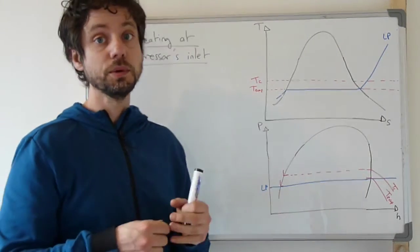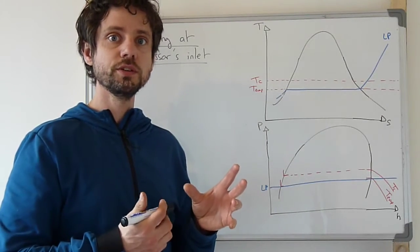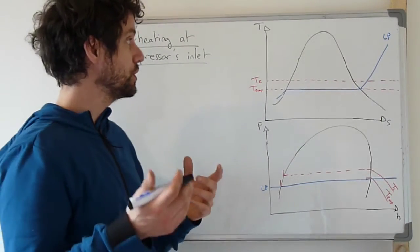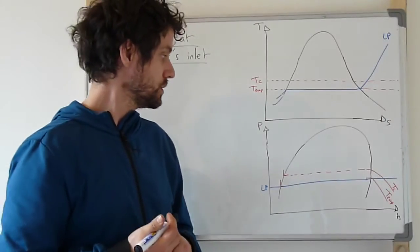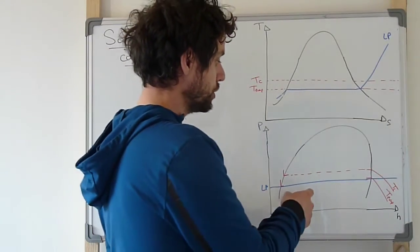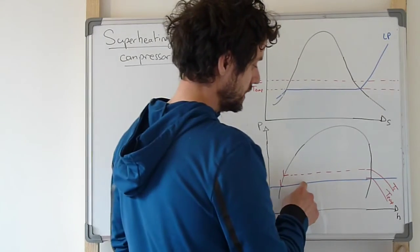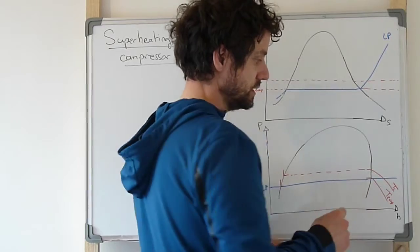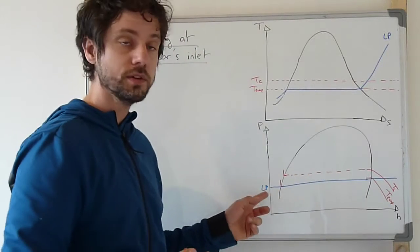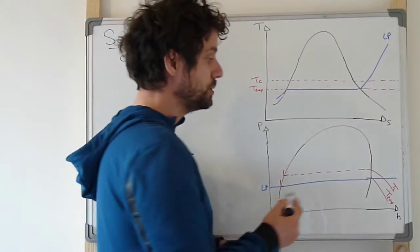Superheat means we want to increase the temperature a bit higher than the saturation temperature from the pressure at which things are taking place, so the low pressure. We can look at this on the pH diagram. So point D is somewhere there at the inlet of the evaporator, and then the freeze will completely evaporate at evaporation temperature, which is the saturation temperature corresponding to low pressure.